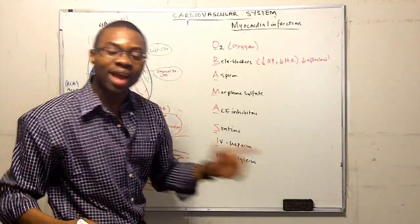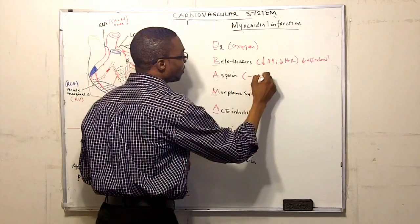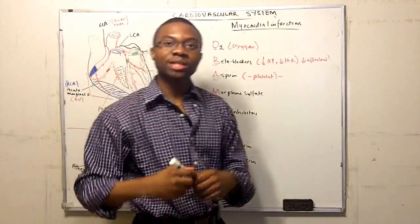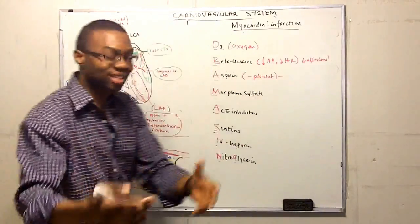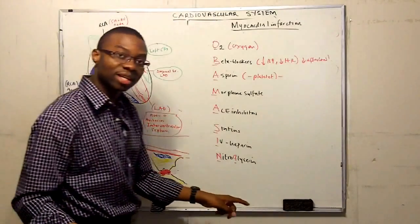You want to give them aspirin. Aspirin is an anti-platelet, so decrease thromboxane A2, decrease ADP. You don't want the platelets to be aggregating, the last thing you want is the little pipe that's already clogged up to keep clogging up.